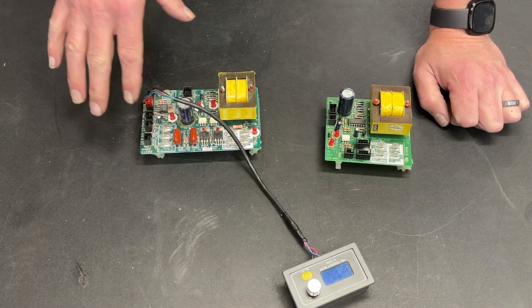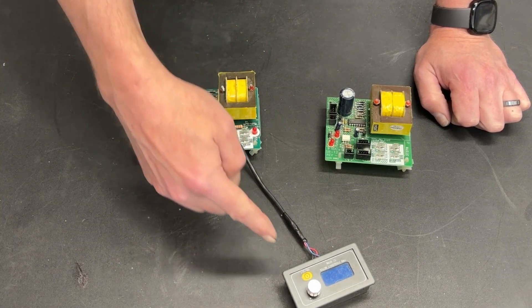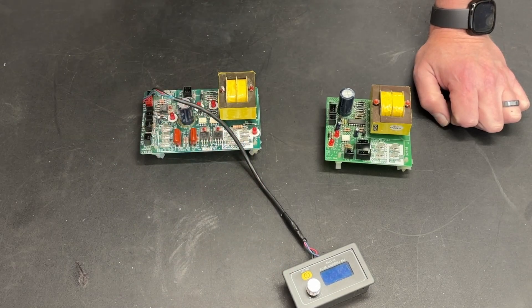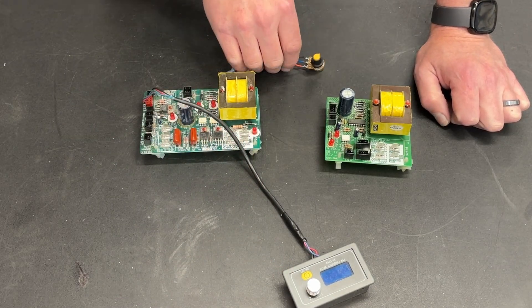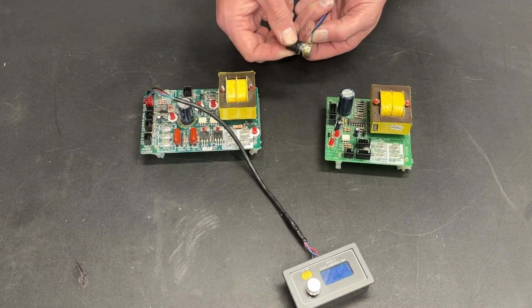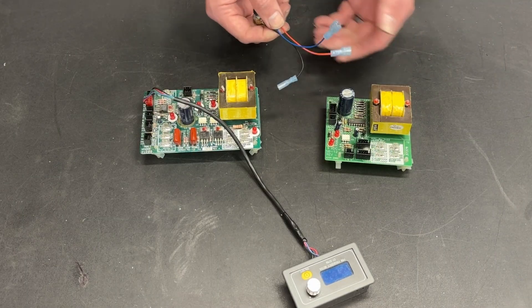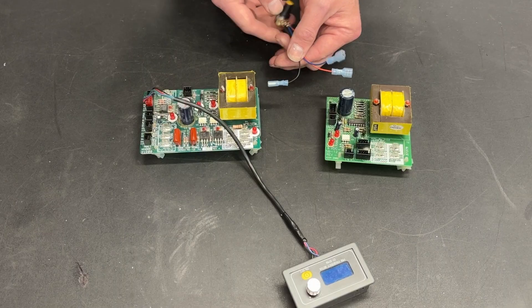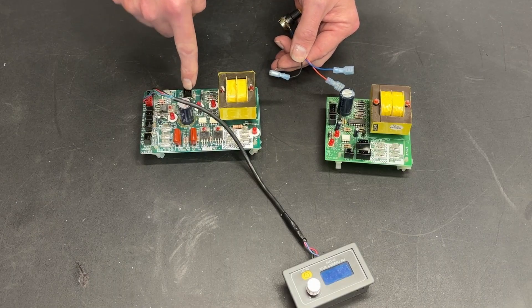Now, why on earth would we want to add this component and this big obnoxious component when it can all be done with that right there? This is a potentiometer, a variable resistor, and with the turn of a knob, I can change resistance. What good does that do me?